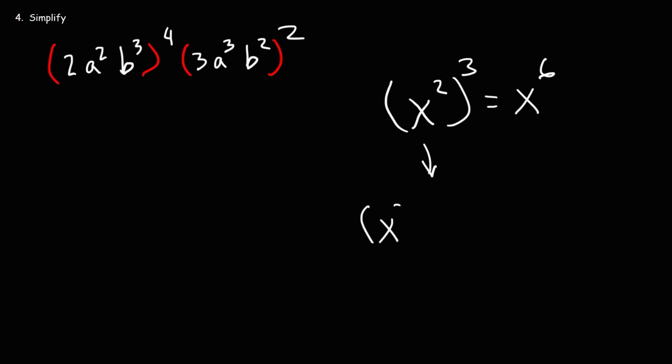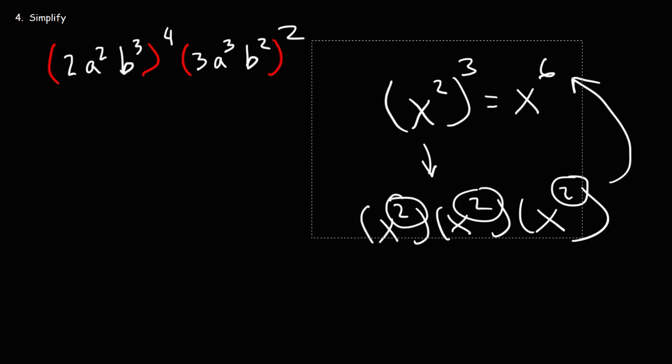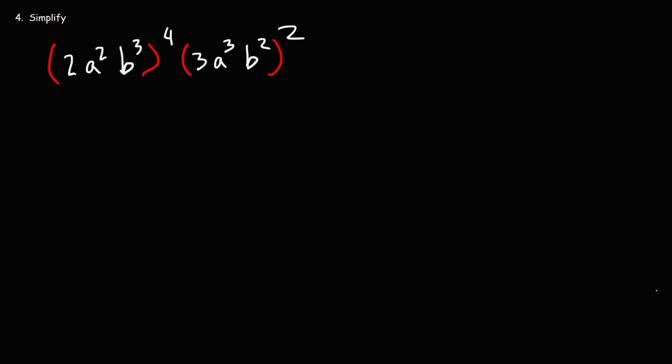And when you multiply a variable, you add the exponents. 2 plus 2 plus 2 gives you 6. So when raising one exponent to another exponent, you have to multiply the exponents. The exponent of 2 is 1. The exponent of 3 is 1. So we're going to multiply 1 by 4. So we're going to get 2 to the 4. 2 by 4, so that's going to be A to the 8. And then 3 times 4 is 12, so B to the 12. And then let's distribute the exponent for the second one. 1 times 2 is 2. 3 times 2 is 6. 2 times 2 is 4.